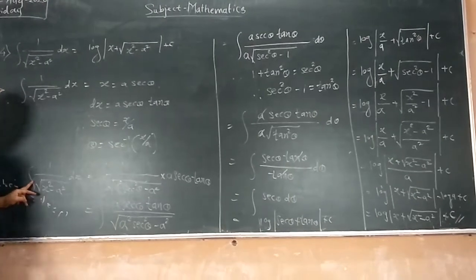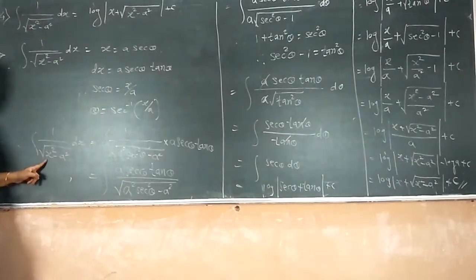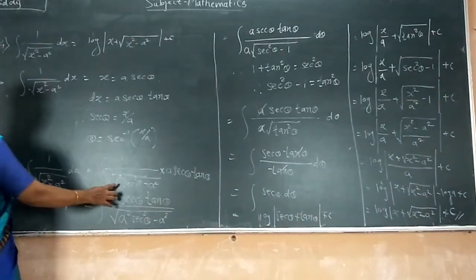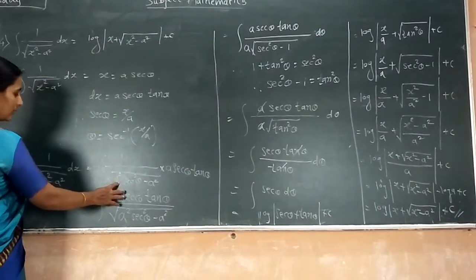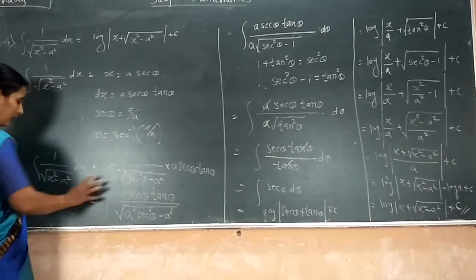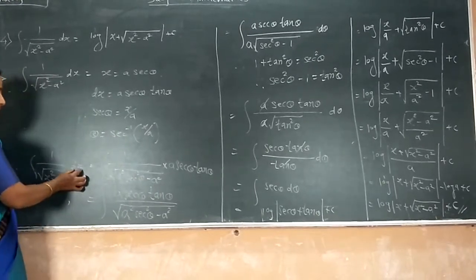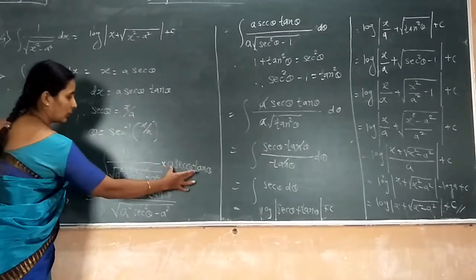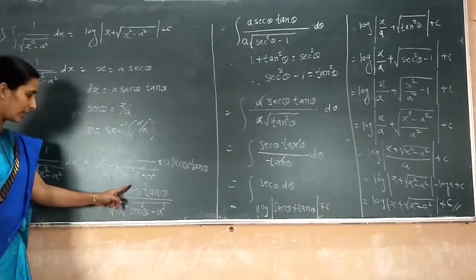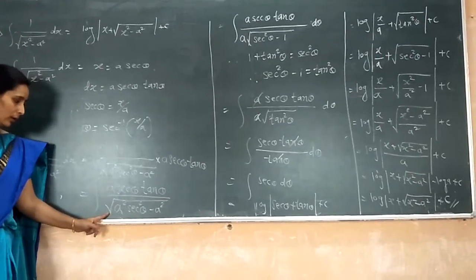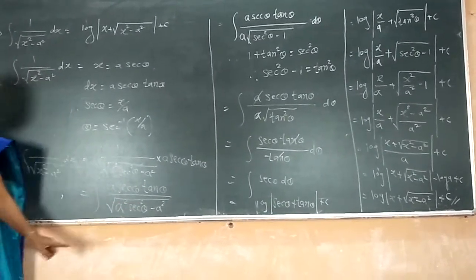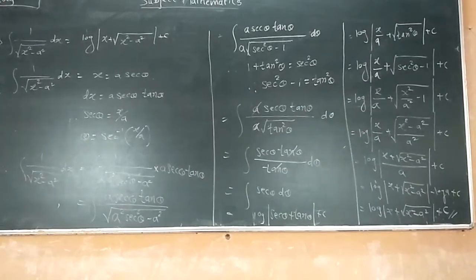Our integral term is the integration of 1 over the square root of x squared minus a squared dx. Substituting x equal to a·sec θ, so x squared becomes a squared·sec squared θ. Therefore the term under the root becomes a squared·sec squared θ minus a squared, and we substitute dx equal to a·sec θ·tan θ dθ. Our term is equal to the integration of a·sec θ·tan θ upon the square root of a squared·sec squared θ minus a squared, dθ.